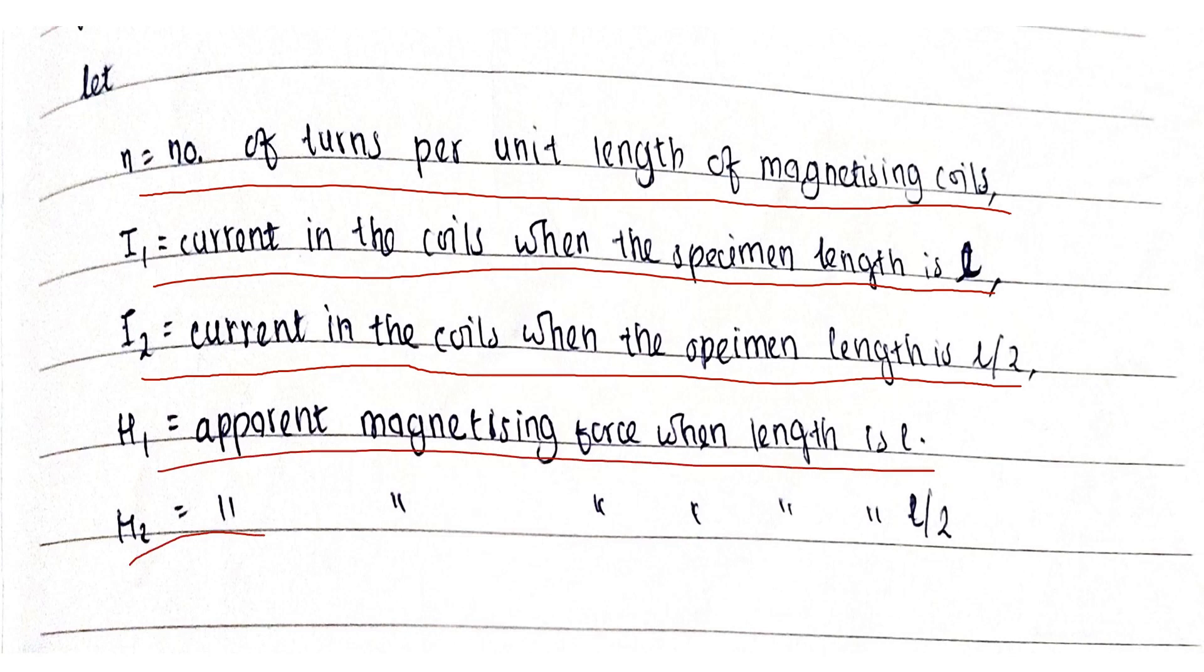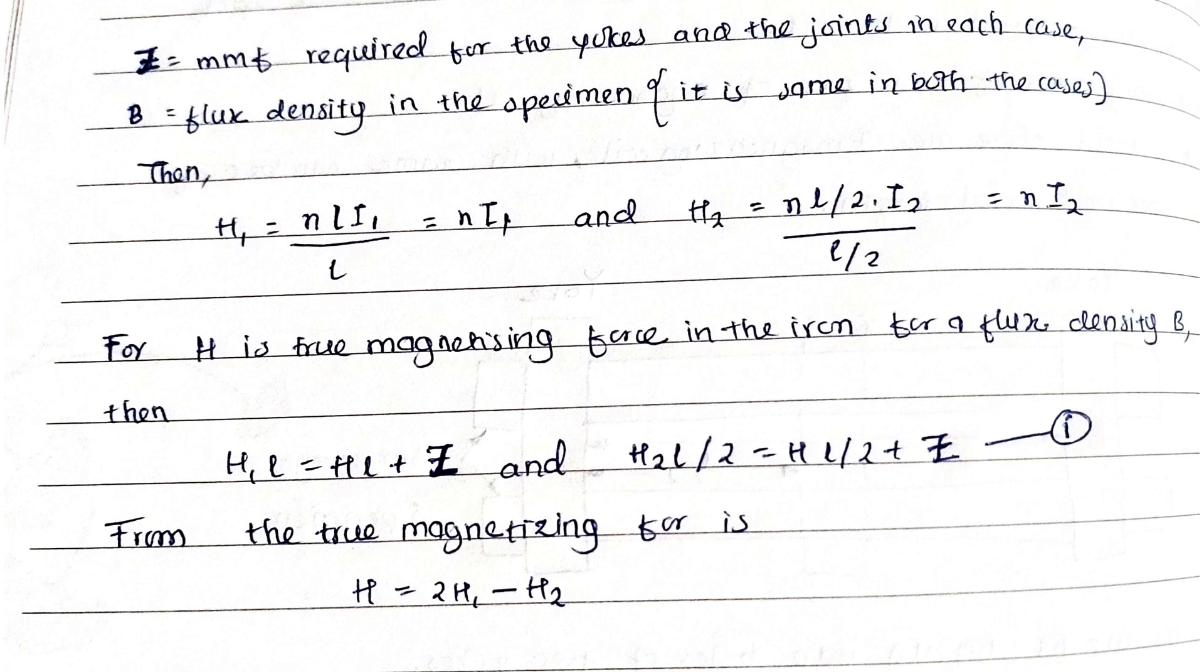H₂ = apparent magnetizing force when the length is L/2. Let Z be the magnetomotive force required for the yokes and the joints in each case. B = flux density in the specimen.